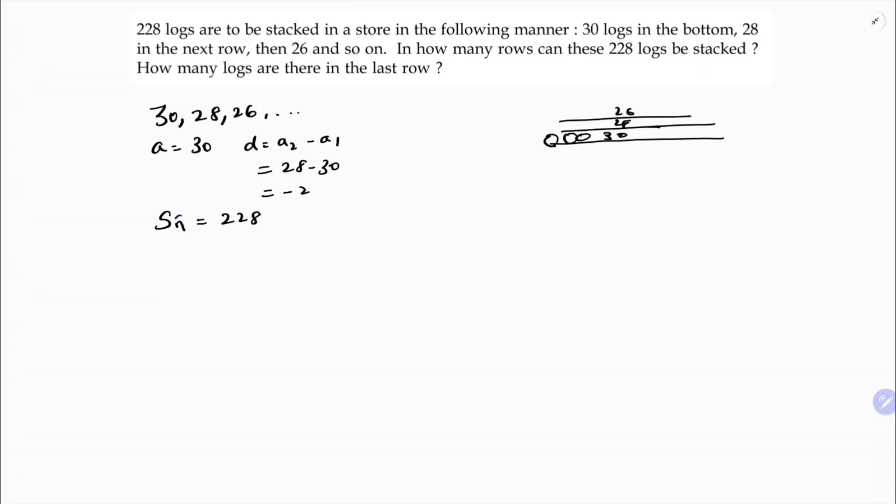So Sn formula is n by 2 into 2a plus n minus 1 into d equals 228. So here n by 2, 2a, a is 30, plus n minus 1 into minus 2.